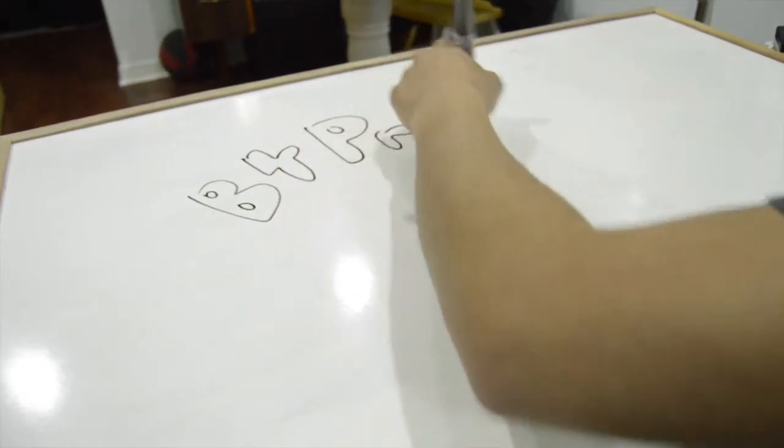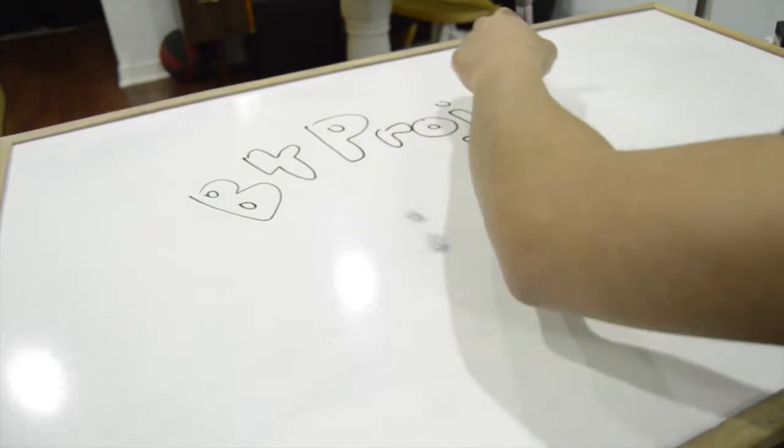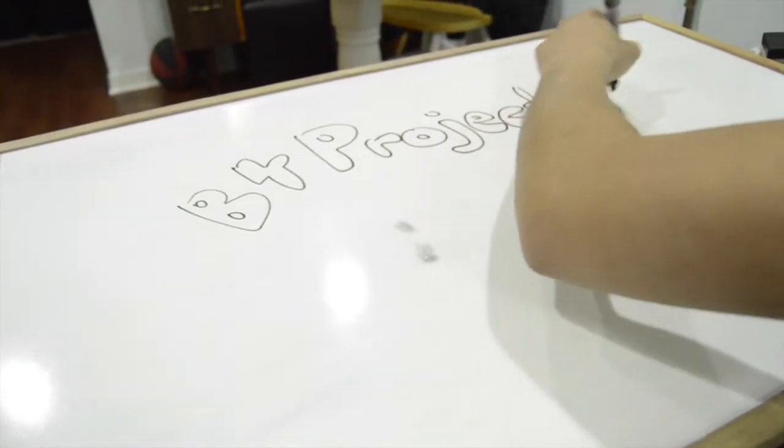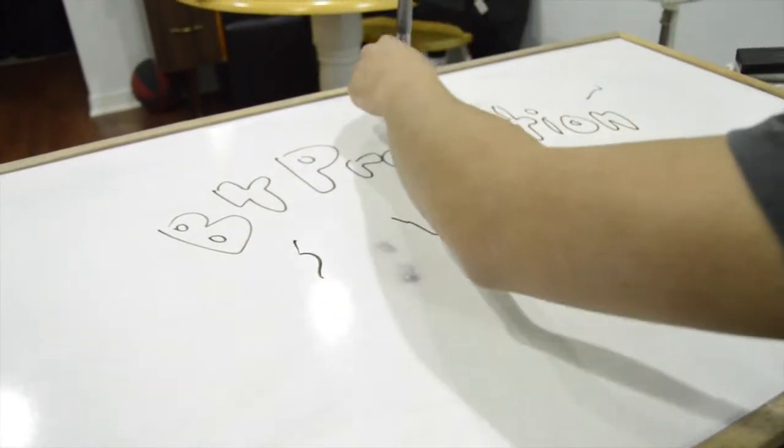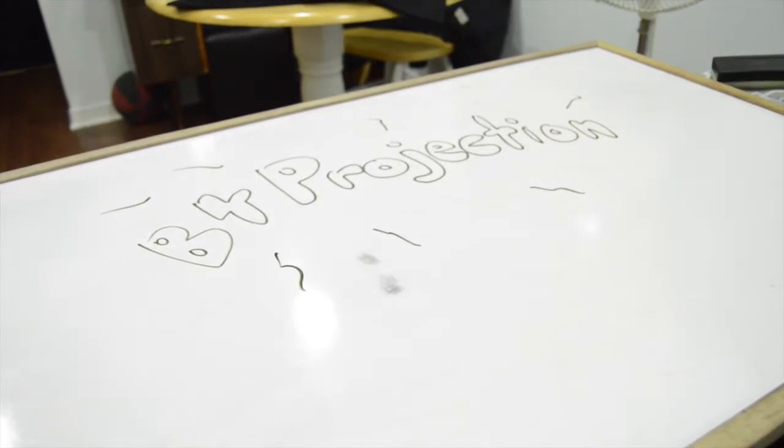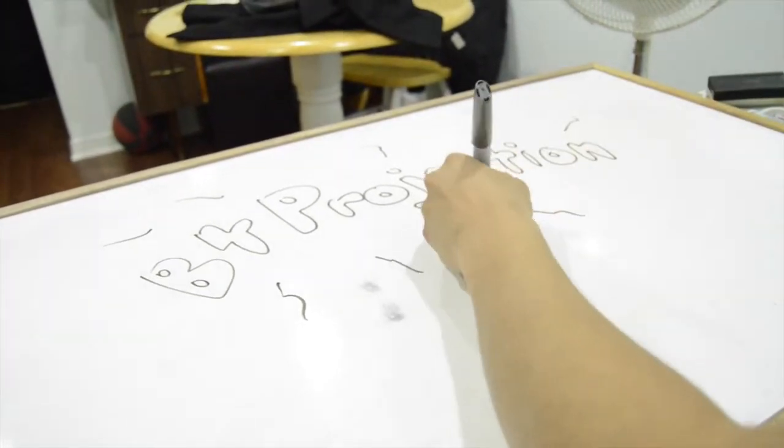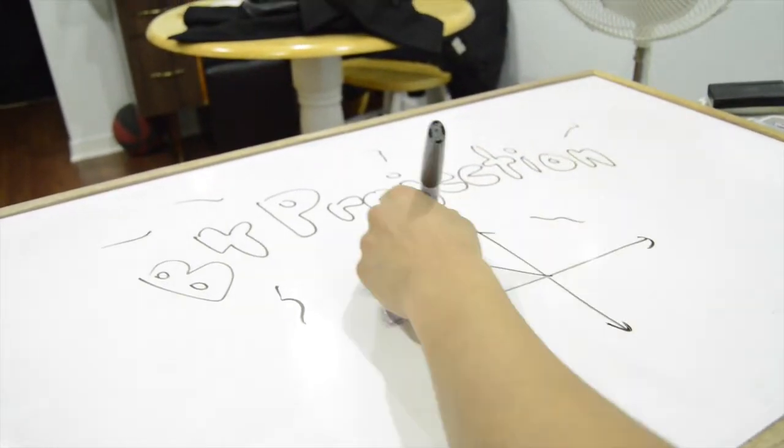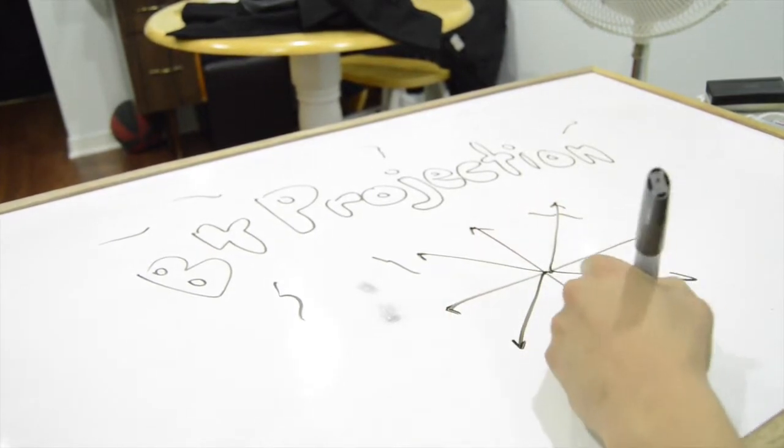Hi guys, we're going to be talking about the projection of the B4 root system onto the three-dimensional space. Before getting to the actual image, I'm going to quickly go over the method of projection that I used to get the result, which is known as the stereographic projection.